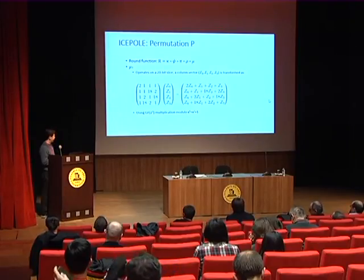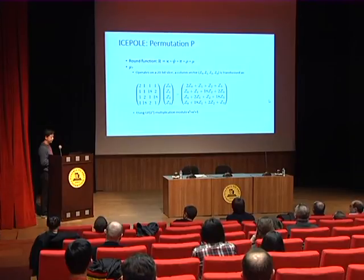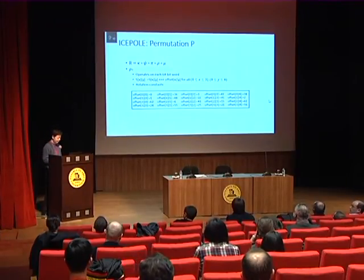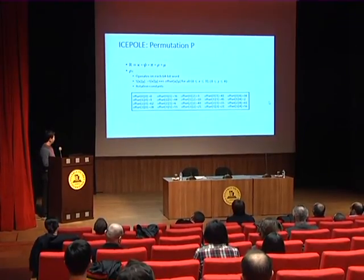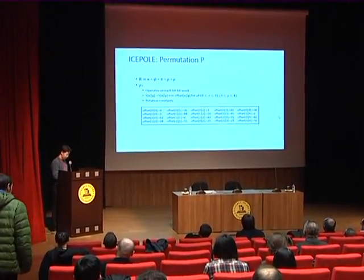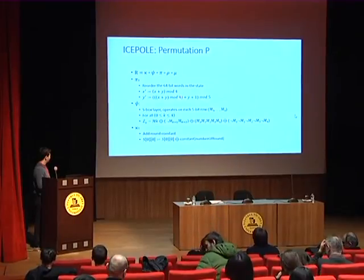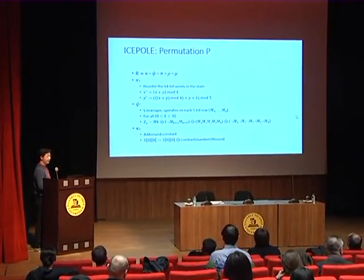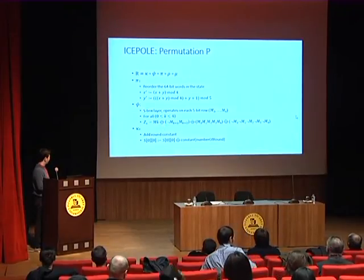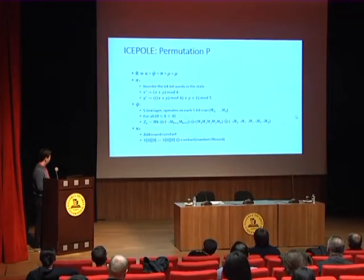The permutation P has five operations. First, mu is a linear operation defined by matrix multiplication over a finite field. Then rho is the rotation of each 64-bit word, with different rotation constants. Next is pi, which reorders the 64-bit words according to two formulas. Then there is the S-box layer phi, with a 5-bit S-box applied on each row of five bits. Finally, a round constant is added.